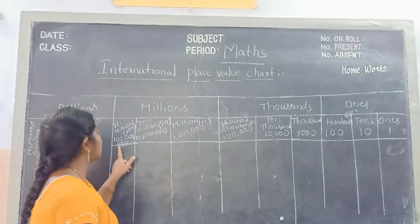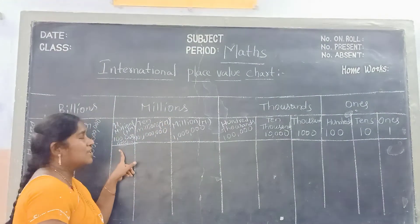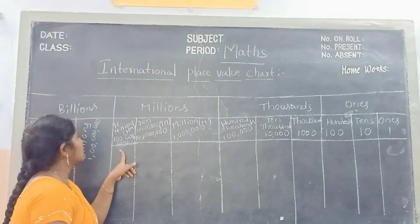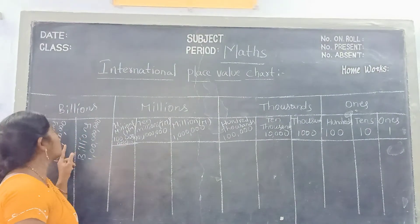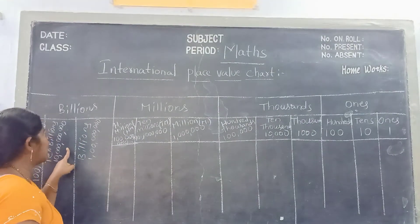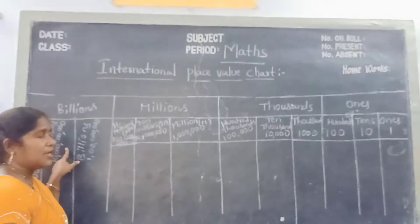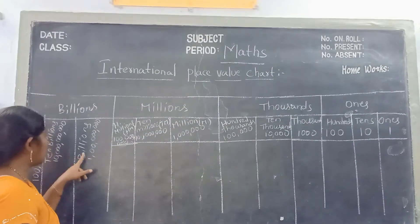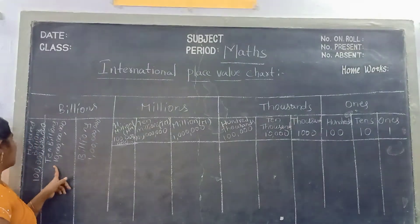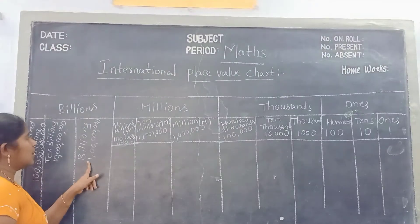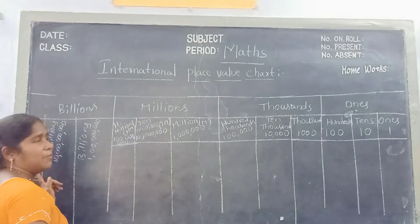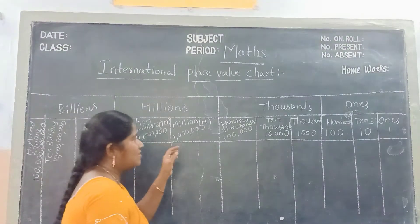Next one is hundred millions. And next one goes to billions. The billions period is divided into 3 places: billions, ten billions, hundred billions.